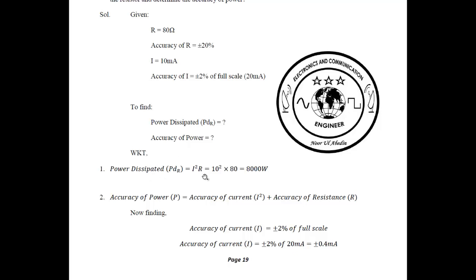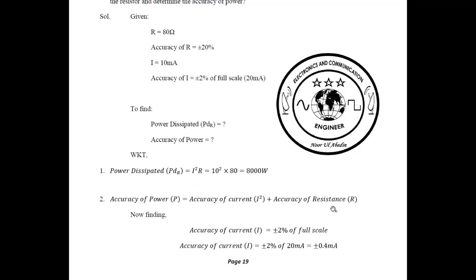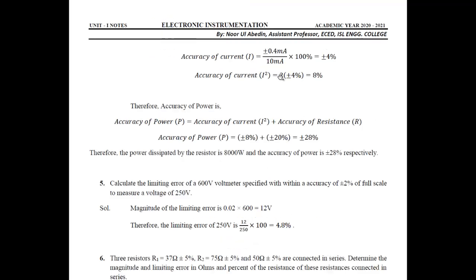Power dissipated is I² × R, where I is 10 milliamps and R is 80 ohms. Accuracy of power equals accuracy of current squared plus accuracy of resistance. Accuracy of current is plus or minus 2 percent of full scale, and full scale is 20 milliamps, so it is plus or minus 0.4 milliamps. That gives 0.4 divided by 10 into 100 percent, which is 4 percent. Accuracy of I² is 8 percent. Total accuracy of power is 8 percent plus 20 percent, which equals 28 percent.